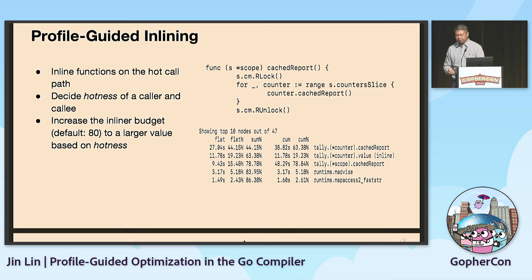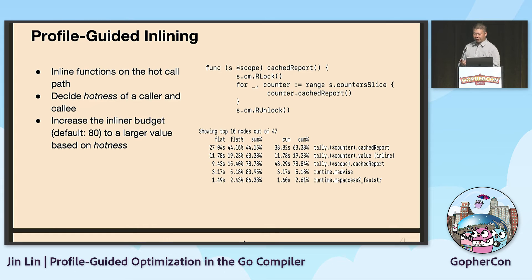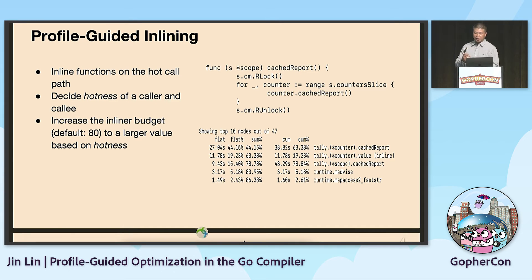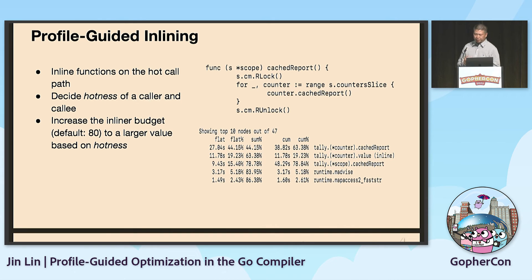Here is an example of profile-guided inlining. We want to inline functions on the hot code path, and the hotness of a call site is decided by the profile. The inliner increases the inline budget to a larger value based on hotness. On the right-hand side, you can see a callee function called inside a loop. For pprof, this function is very hot, but the default inliner cannot inline it because the cost exceeds the standard inline budget. Based on the profile, we increase the budget, so we can inline this function.